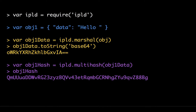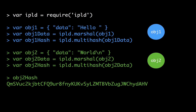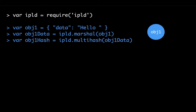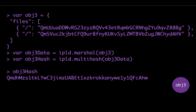Let's do a demo in JavaScript. If we require IPLD and put some data into object one — say 'hello' — we can get the data and get the hash of it. Let's call it object one. We also make a second one, object two, with its own hash. The first object's hash ends in BG, the second ends in HB. We then make a third object using IPLD's format, which has two components: a data parameter and a files parameter. The files parameter stores your links — BG and HB, your two objects. You can create the data and hash for this third object, which ends in HW.